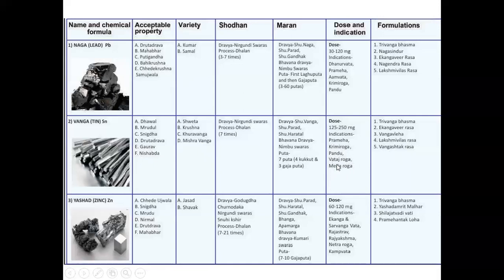The formulations from Vanga — Tin — include Trivanga Bhasma, Ekanga Virarasa — very specific for Hemiplegia — Vanga Valleha, Lakshmi Vilasa Rasa, and Vangeshvara Rasa. These are five products from Vanga.